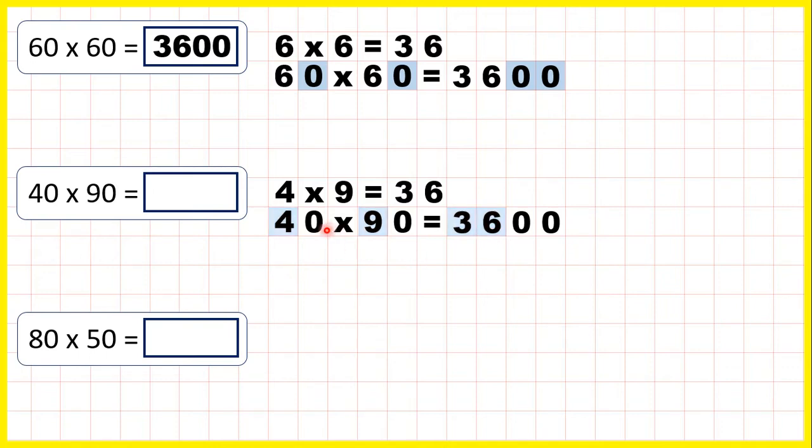and then because there are two end zeros in the question, we need two end zeros in the answer. So that's 3,600. Now 80 times 50.